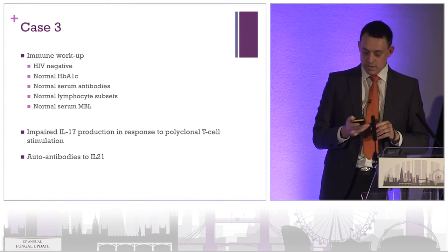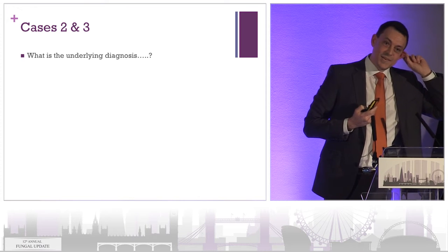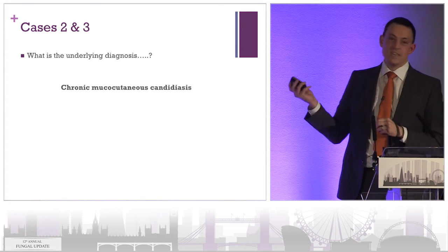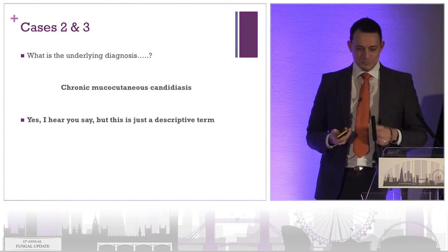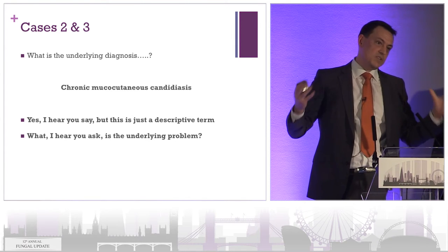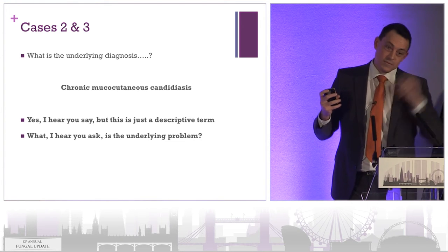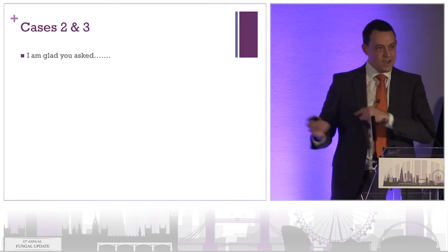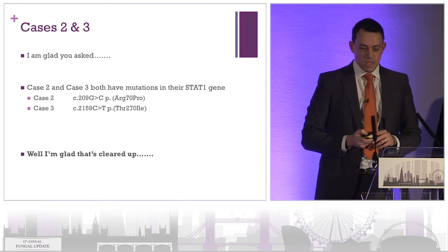What do you think the underlying diagnosis is in these two cases? Chronic mucocutaneous candidiasis — that's fine, I hear you, but this is just a descriptive term. What is the underlying problem? In both of these two cases, they both had mutations in their STAT1 gene. So chronic mucocutaneous candidiasis is a descriptive term — it just means they have chronic mucocutaneous candidiasis. The really interesting thing is what the underlying mutation is.